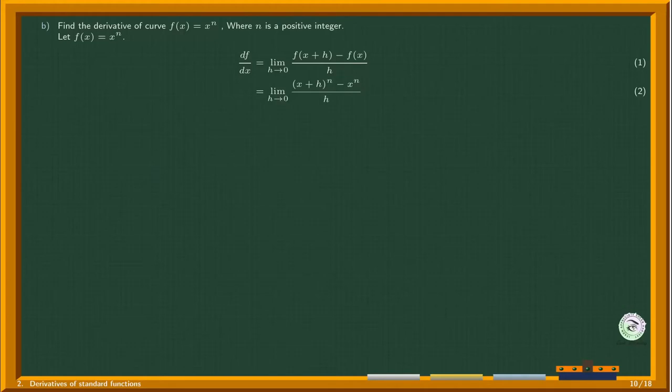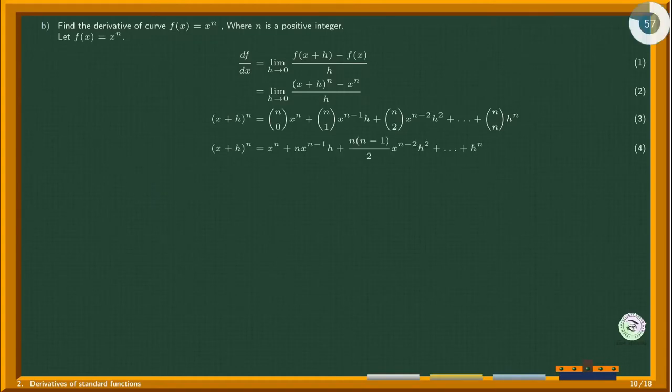Expanding (x+h)^n using the binomial theorem gives equation 3. By simplifying coefficients in equation 3, we get equation 4.